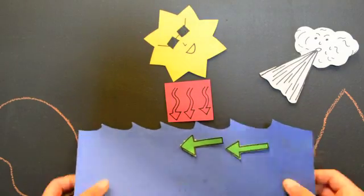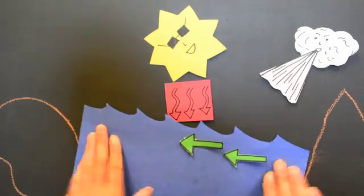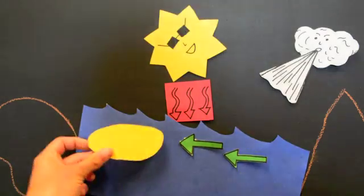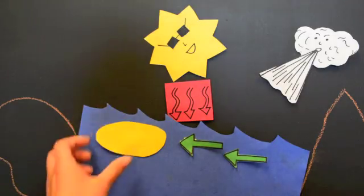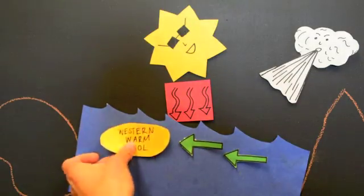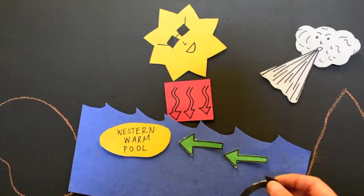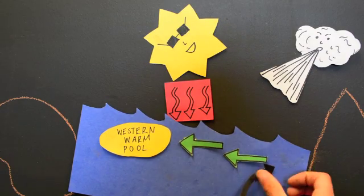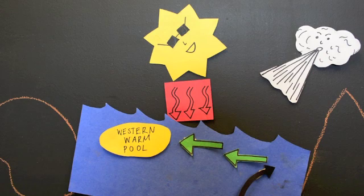This means that the western part of the basin is actually half a meter higher than the eastern part, since all that warm water gets collected into what's called the western warm pool. Water from the deep then comes up closer to the surface on the east side to replace what got blown over.